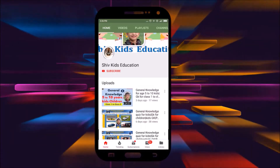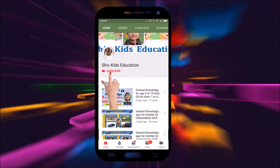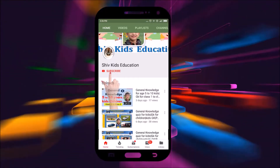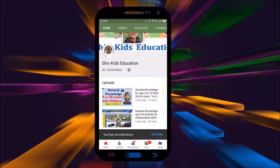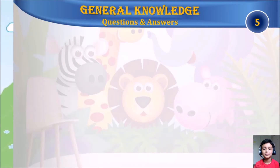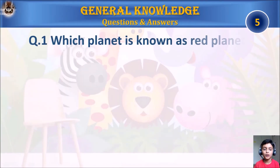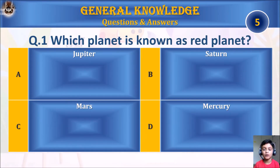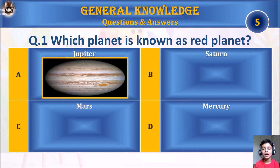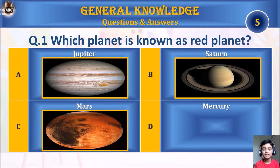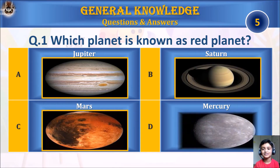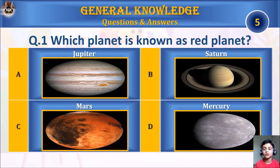If you really like my video, please click on the subscribe button and don't forget to click on the bell icon to get notifications for new videos. Question 1: Which planet is known as the red planet? A. Jupiter, B. Saturn, C. Mars, or D. Mercury. Your time starts.